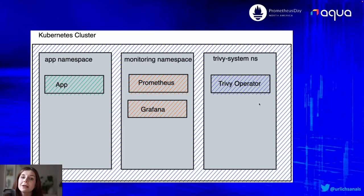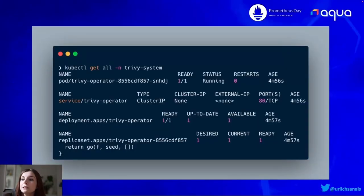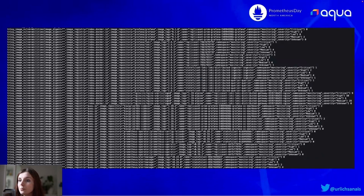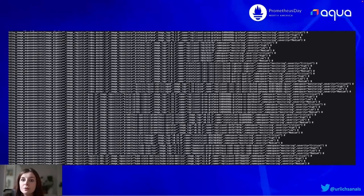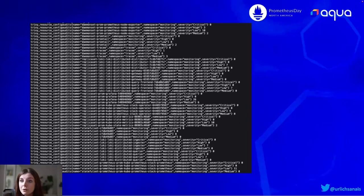Our security scanner is the Trivy operator. It runs as a normal Kubernetes operator inside your Kubernetes cluster and it monitors all of your resources — or at least the resources that you want to monitor — and then it runs security scans on those. For instance, if you spin up a new container image the Trivy operator will know that and will scan it for vulnerabilities. In the Trivy system namespace we have a normal replica set deployment and a service running, and that will produce metrics on your vulnerabilities, metrics on your exposed secrets, and also metrics on your RBAC configurations and any misconfigurations of your running resources.